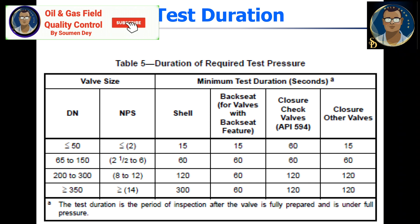Table 5 of API 598 depicts the duration of test pressure. For example, for valves less than 2 inch diameter, the shell test duration is 15 seconds, and for valves with a back seat feature it is also 15 seconds. For closure of check valves per API 594 it is 60 seconds, and for closure of other valves it is 15 seconds.